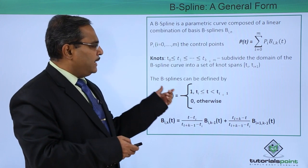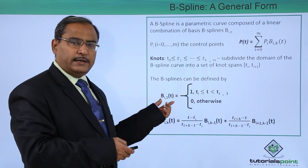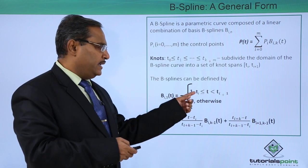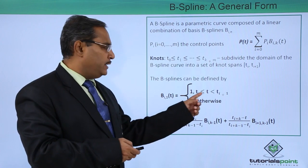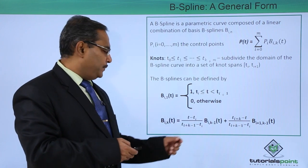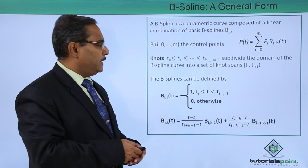The B-spline can be defined using this respective equation. B-I-1(T) is equal to 1 if T is ranging between TI to TI plus 1, otherwise 0. This is the respective equation for the B-spline curve.